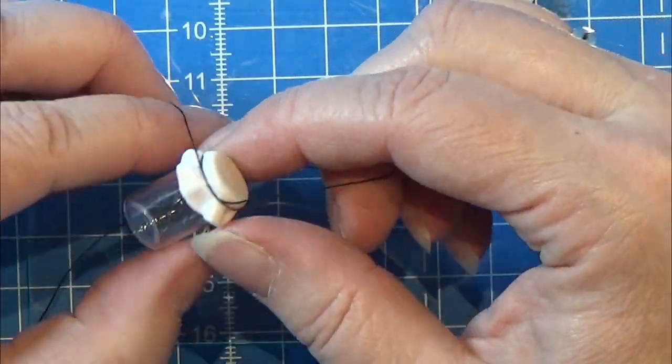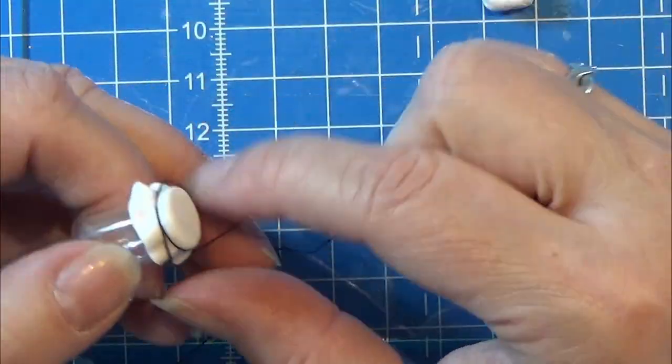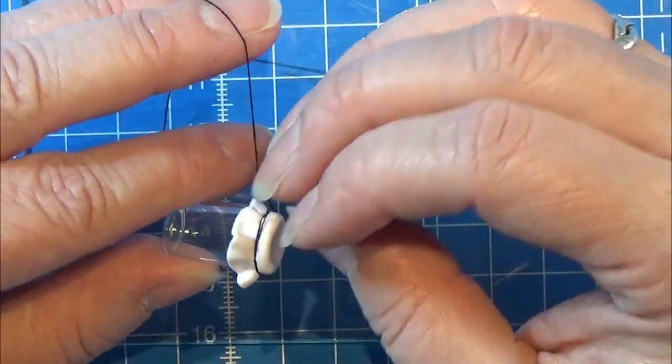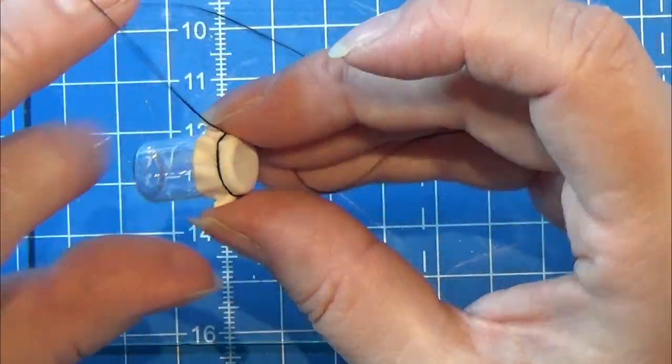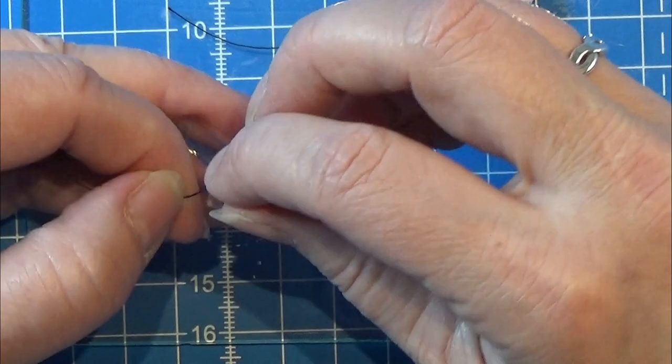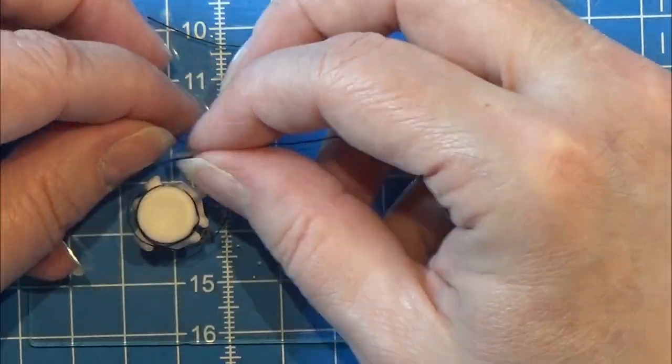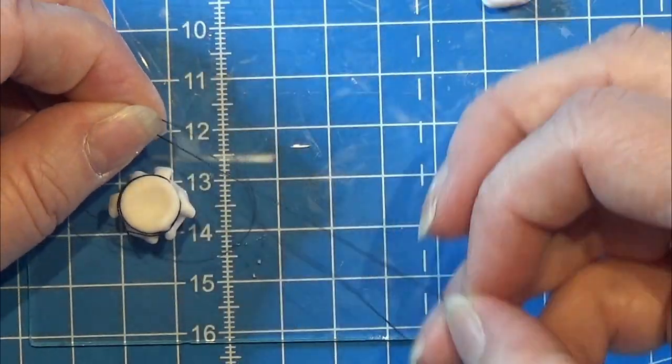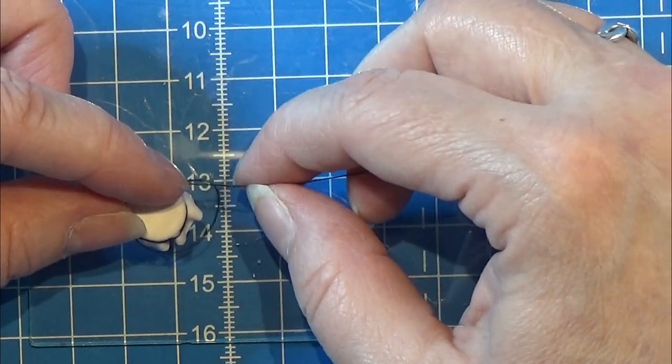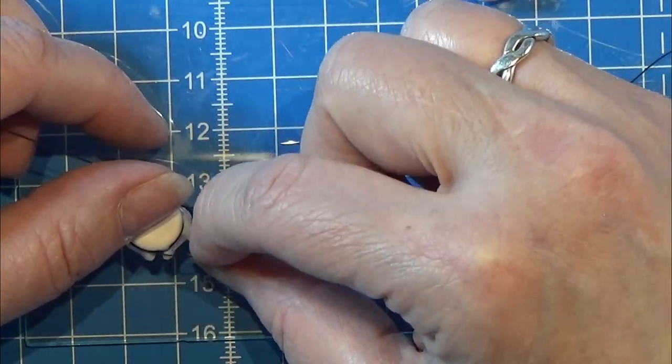And then I am going to put it around again because I think one piece of sewing thread is a tiny bit too thin for me. So I'm going around again and I am making a double knot here. It is a little tricky but the result is really good.